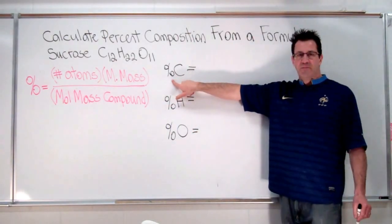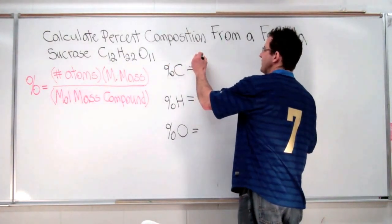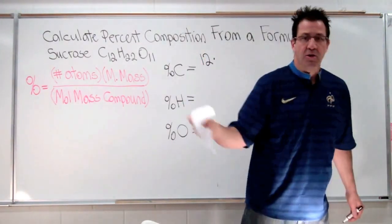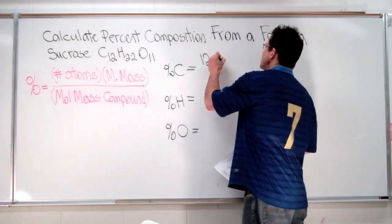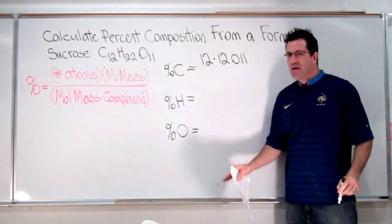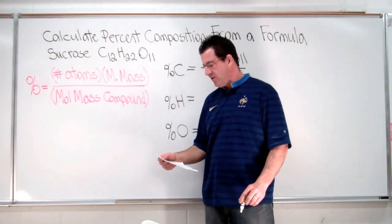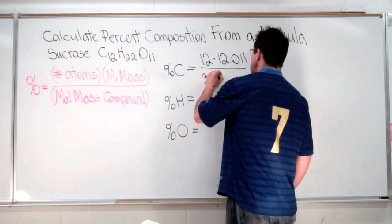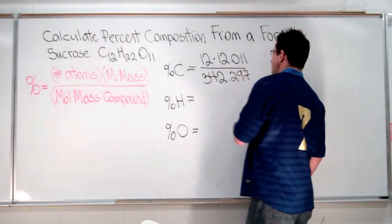Let's start with carbon. We're going to calculate the percent composition of carbon in sucrose. So we have 12 atoms of carbon, and we're going to multiply that times the molar mass of carbon. Then we're just going to look at our periodic table. We see that the molar mass of carbon is 12.011. And then we're going to divide that by the molar mass of the entire compound. I calculated that earlier, and the molar mass of the entire compound is 342.297 grams per mole.